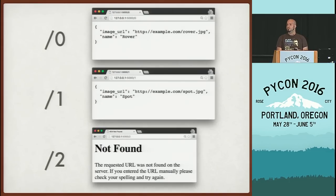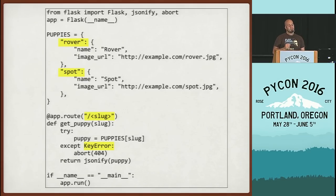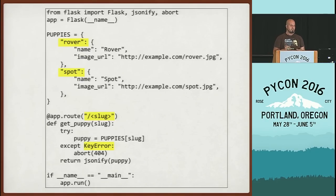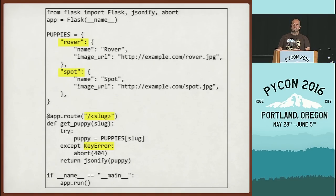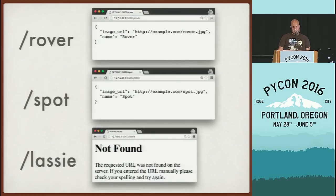0, 1, and 2 aren't really very friendly URLs. We want to hug these puppies, not count them. So we can modify this to use a dictionary of puppies instead of a list. The keys of this dictionary use something called a slug — a publishing term meaning a short, usually lowercase ASCII version of whatever object you're trying to find. That allows you to uniquely identify a specific object while having a human-friendly name. Now you can go to slash rover and get Rover, or slash spot and get Spot.